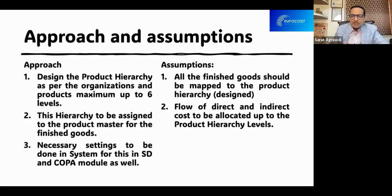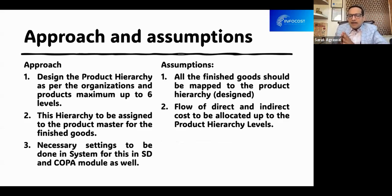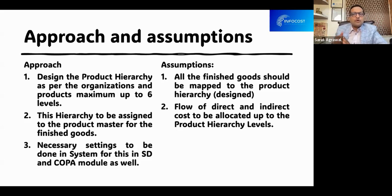Before we go further, we need to understand the approach and assumptions. The approach is clear: we can define a maximum of up to six levels, and this hierarchy we can assign in the product master. We need to do the necessary configuration settings in the SD and COPA modules. The underlying assumption is that all finished goods relevant for the product hierarchy should be mapped or tagged to the product hierarchy, and we should be linking all the direct and indirect costs which we want to report at the product hierarchy level.